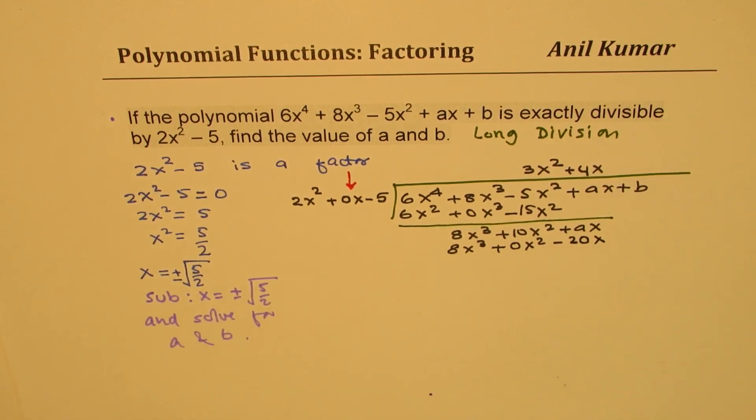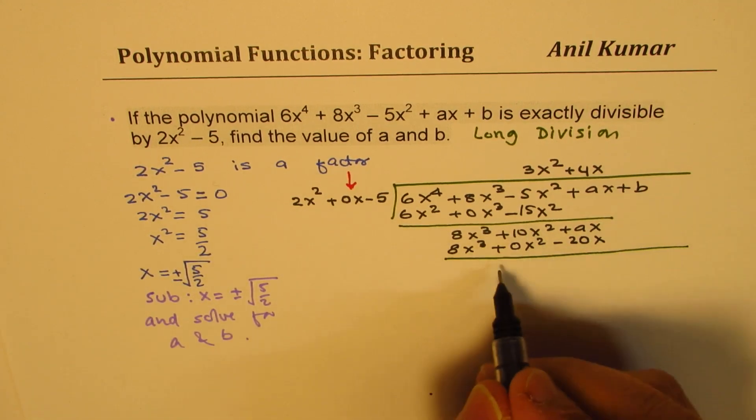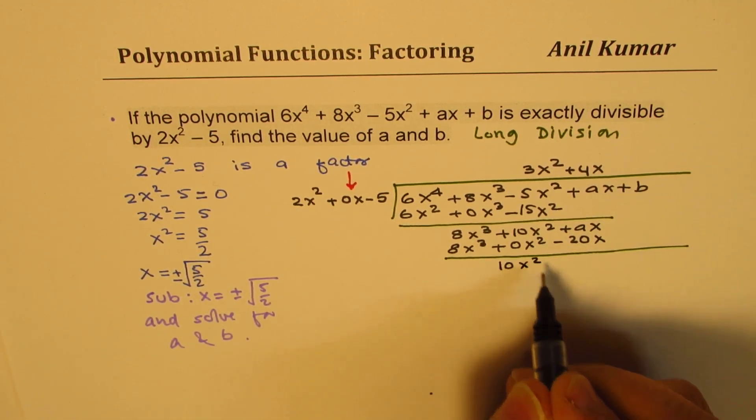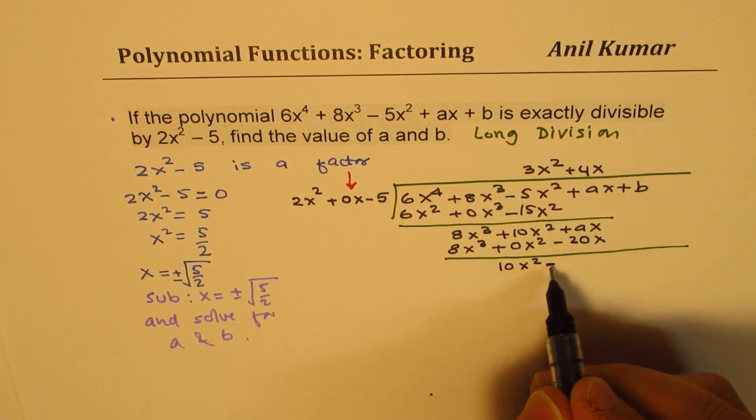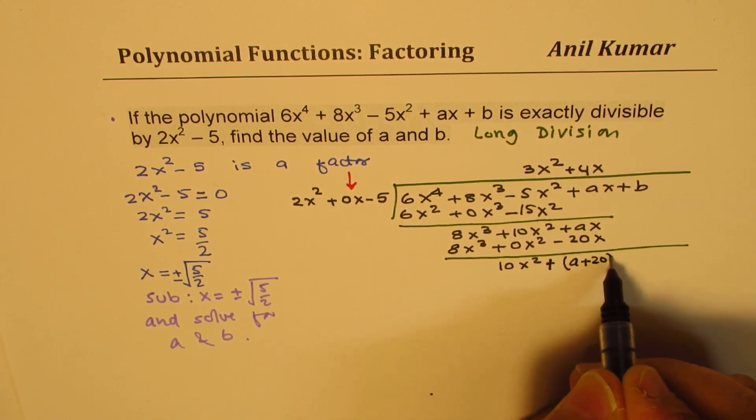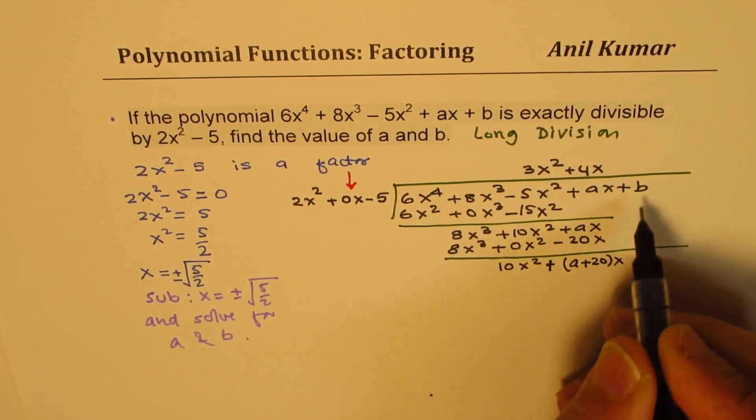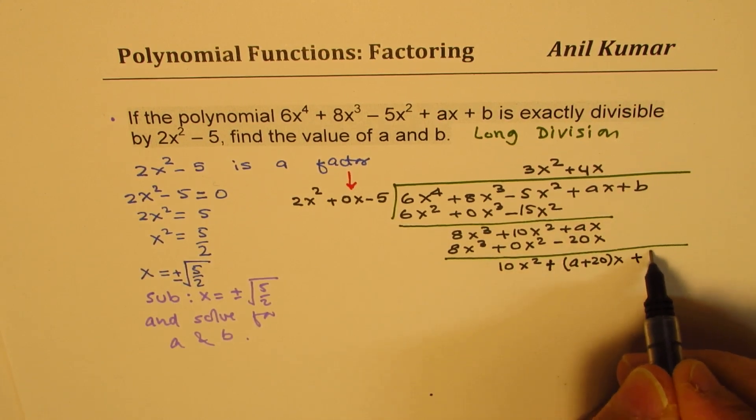Now if you take away, what do you get? Here we get 10x squared and here we get plus. We have, I could write like this, within brackets, I could write a plus 20x. So when you take away, and now bring down plus b.